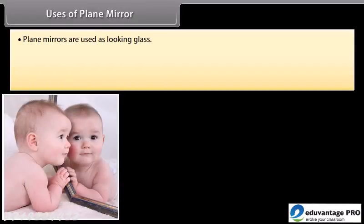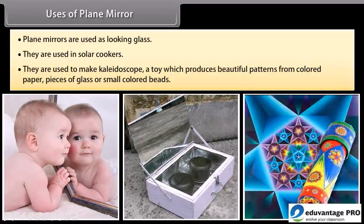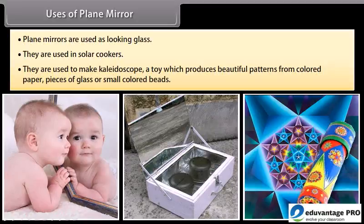Plane mirrors are used as looking glass. They are used in solar cookers. They are used to make kaleidoscope, a toy which produces beautiful patterns from colored paper, pieces of glass or small colored beads.